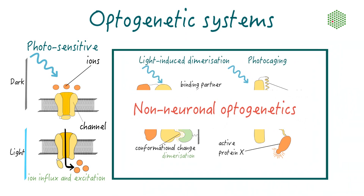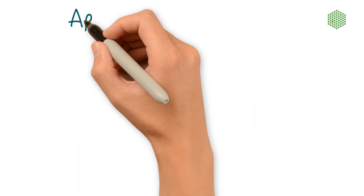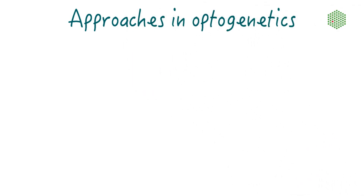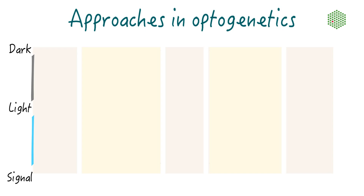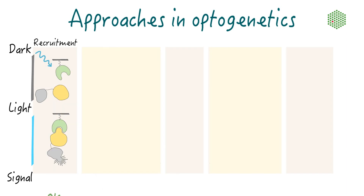This e-learning course focuses exclusively on these more recently evolved systems that can be applied in essentially all cell types and model organisms. Optogenetics makes use of a defined set of molecular approaches. The most commonly used approach is the recruitment of a protein of interest tagged with a photosensitive domain to a specific anchor protein upon light activation.